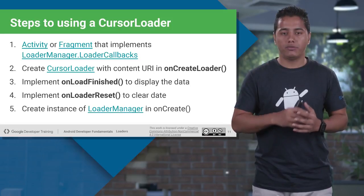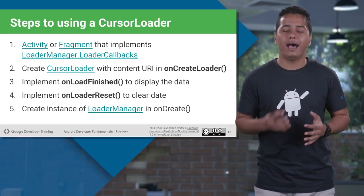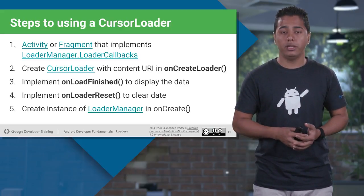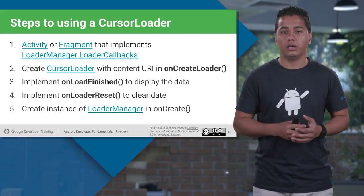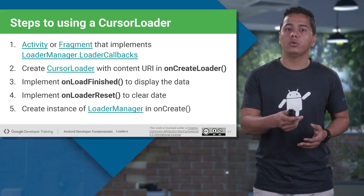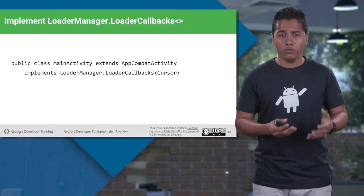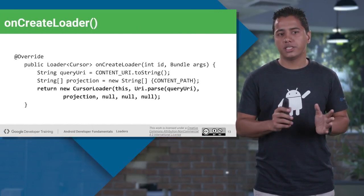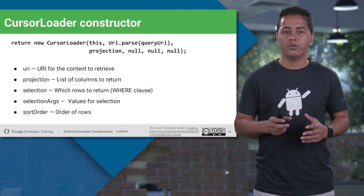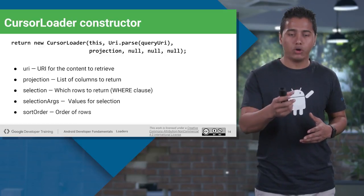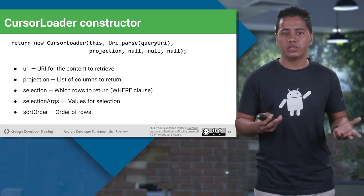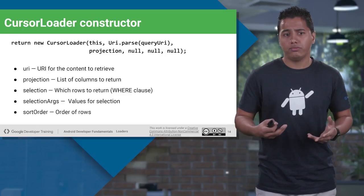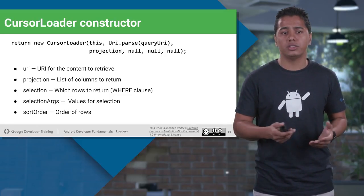After defining all these callback methods, you have to initiate or create an instance of your loader. Inside the onCreate method of your activity, you use initLoader to initialize the loader. First, implement the LoaderManager.LoaderCallbacks interface inside your activity. Let's look at the constructor of CursorLoader: the first argument is your URI (the content URI), second is the list of column projection, third is which row to return in the WHERE clause, fourth is the value of those selection columns, and last is your orderBy.